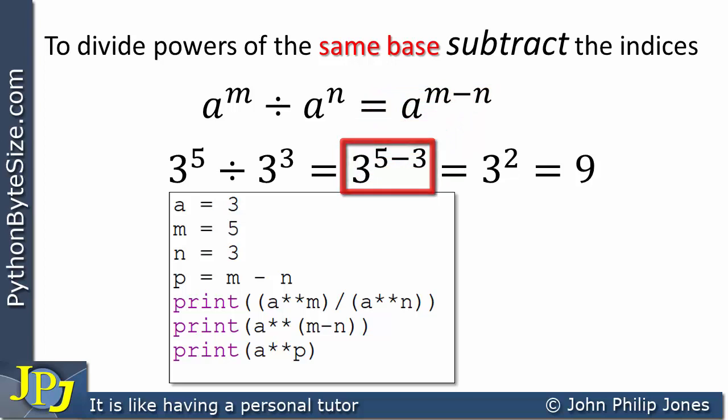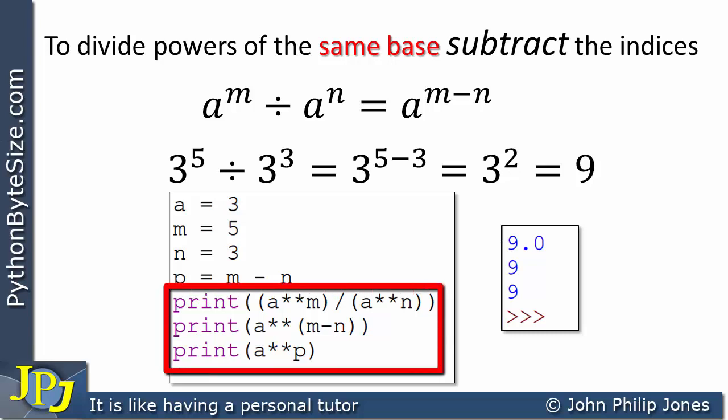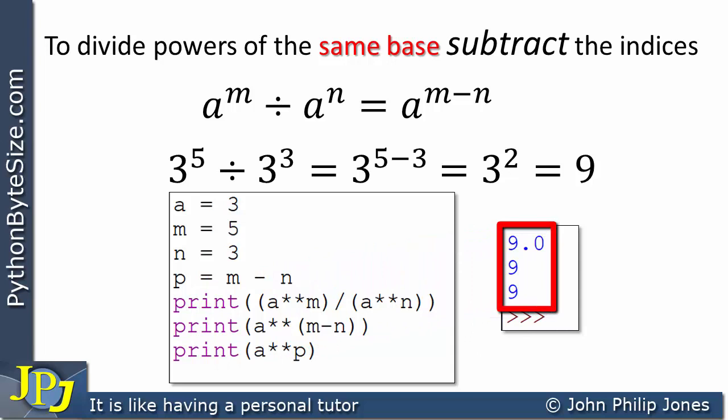And this line is going to print this calculation, which is reflecting this value here, because the P is the M minus the N. And of course, that is the 5 minus the 3, which gives 2, and that reflects the 2 that is here. Now, when this program is executed, what we will see at the runtime is this. And we can see that these 3 print statements have, in each case, given us the value of 9, which reflects the results we saw here.